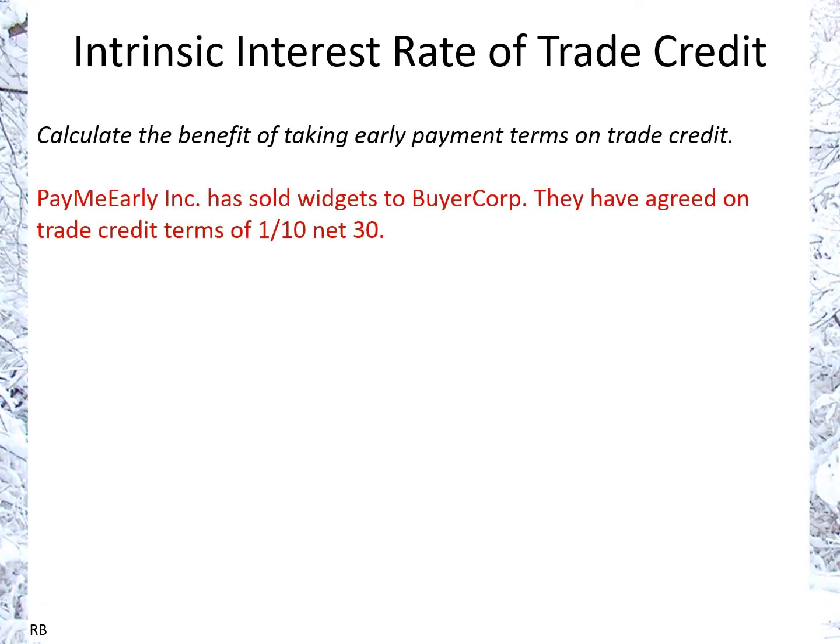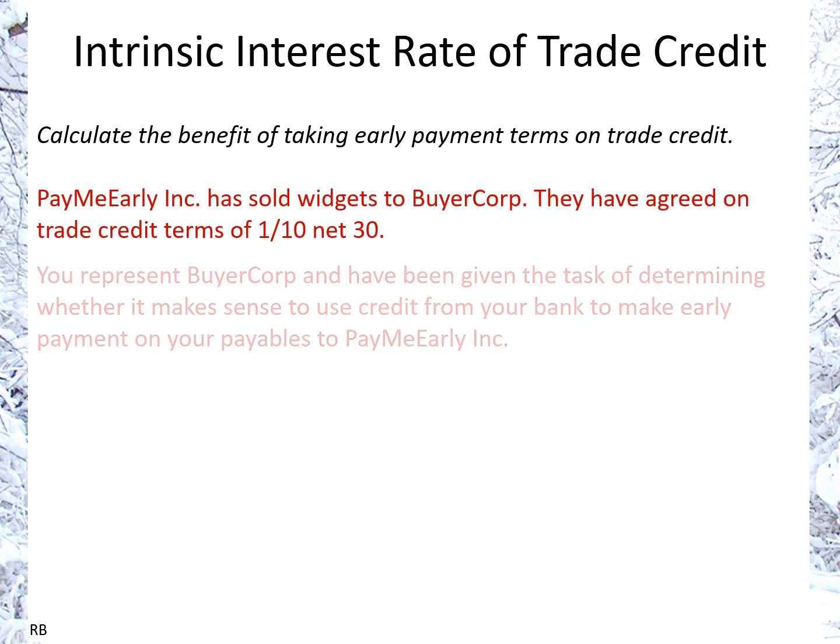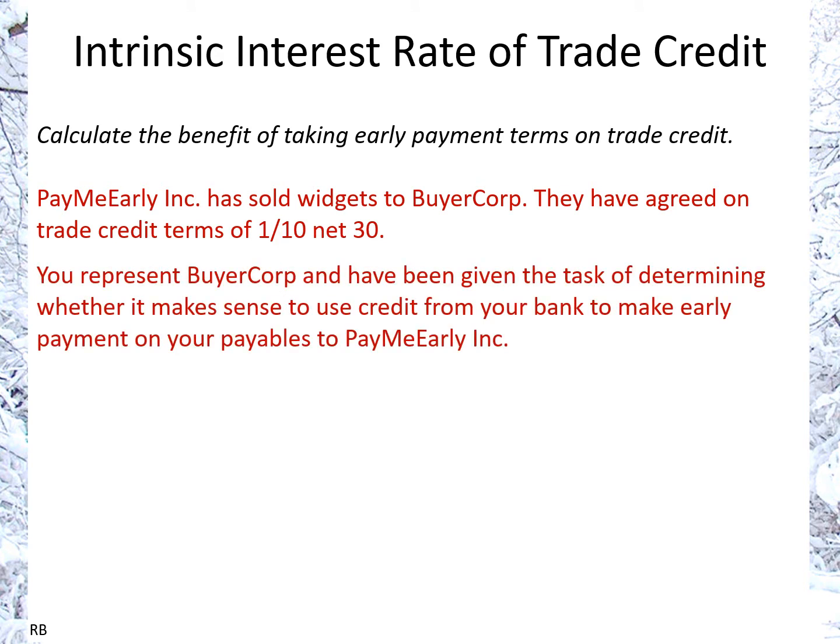Intrinsic interest rate of trade credit: calculate the benefit of taking early payment terms on trade credit. PayMeEarly Inc. has sold widgets to BuyerCorp. They have agreed to trade credit terms of 1/10 net 30. You represent BuyerCorp and have been given the task of determining whether it makes sense to use credit from your bank to make early payment on your payables to PayMeEarly Inc.